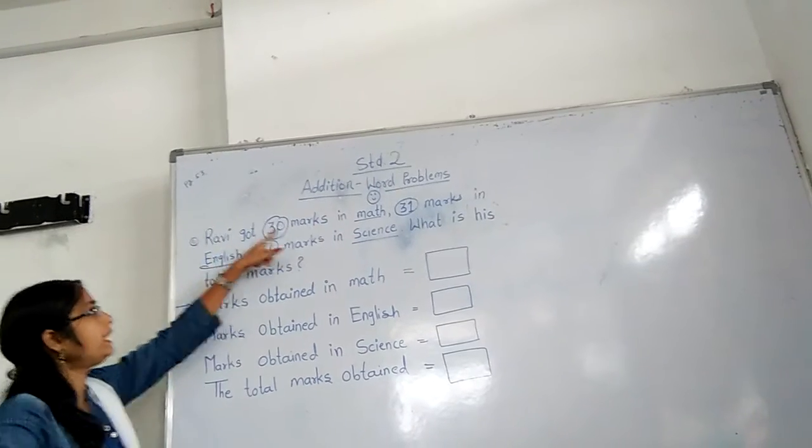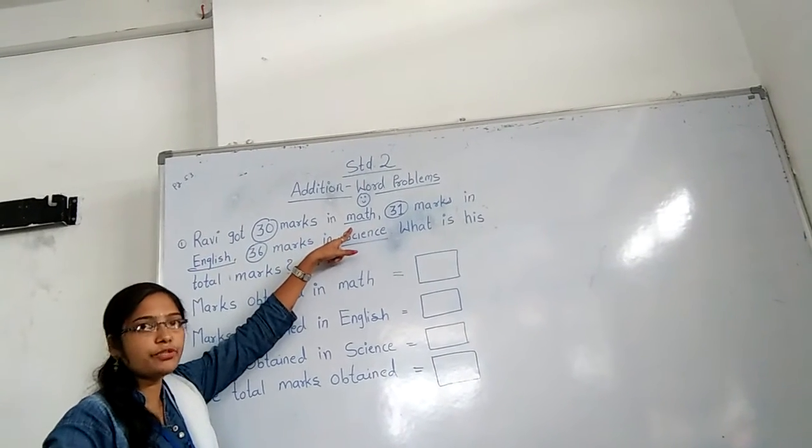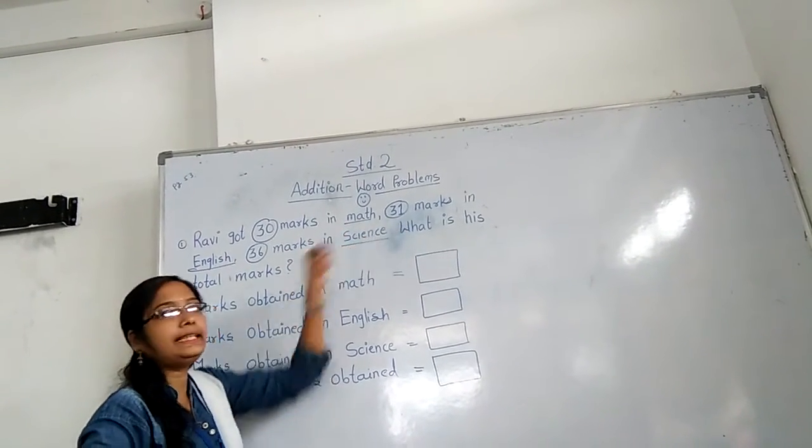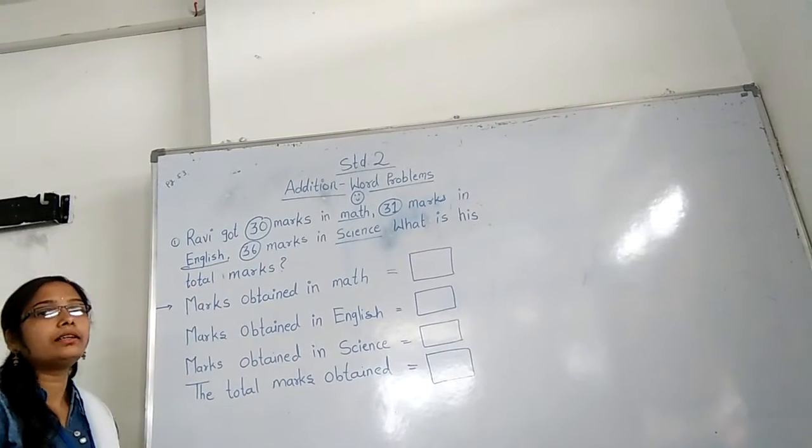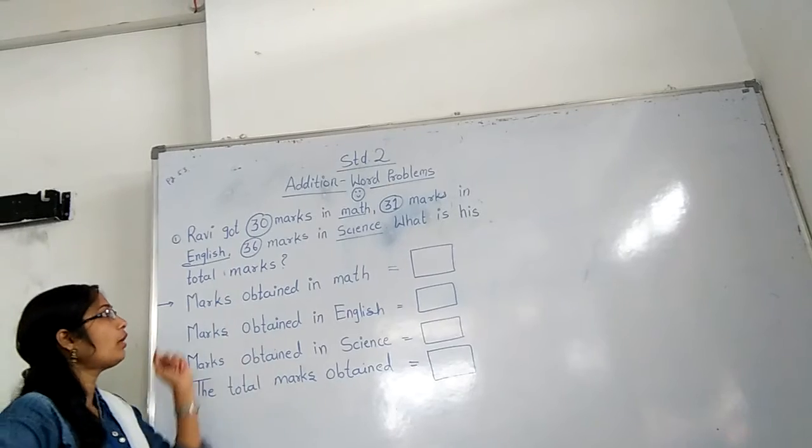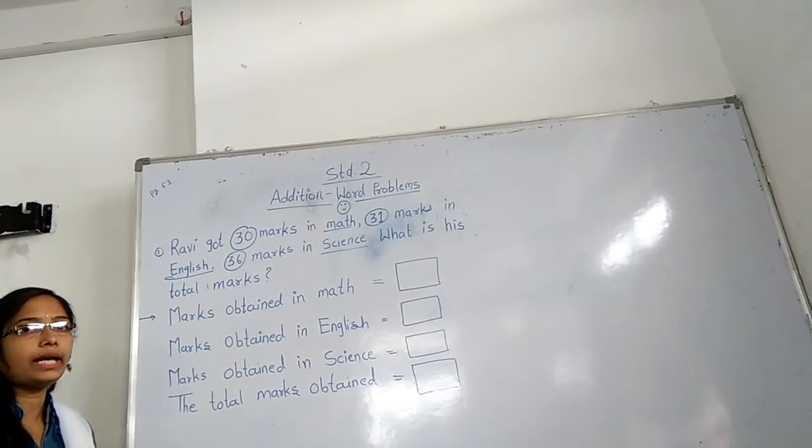Ravi got 30 marks in math subject, 31 marks in English subject, and 36 marks in science subject. Then what is his total marks?